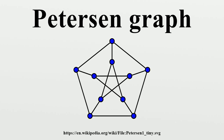It is the smallest possible snark, and was the only known snark from 1898 until 1946. The snark theorem, a result conjectured by W. T. Tutte and announced in 2001 by Robertson, Sanders, Seymour, and Thomas, states that every snark has the Petersen graph as a minor. Additionally, the graph has fractional chromatic index three, proving that the difference between the chromatic index and fractional chromatic index can be as large as one. The long-standing Goldberg–Seymour conjecture proposes that this is the largest gap possible.